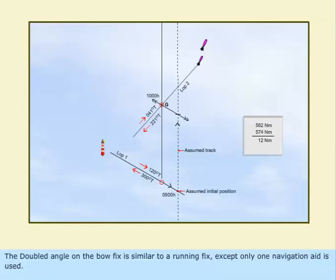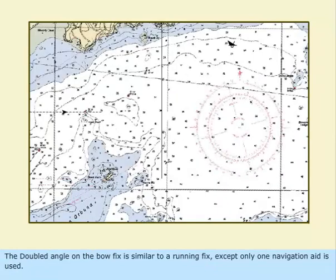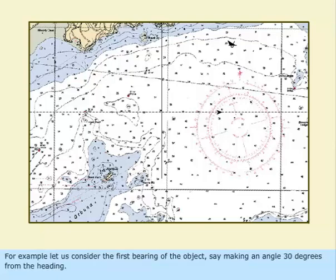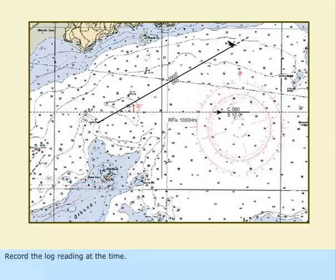The doubled angle on the bow fix is similar to a running fix, except only one navigation aid is used. For example, let us consider the first bearing of the object, say making an angle 30 degrees from the heading. Record the log reading at the time.